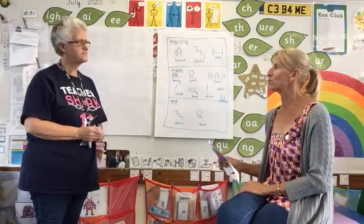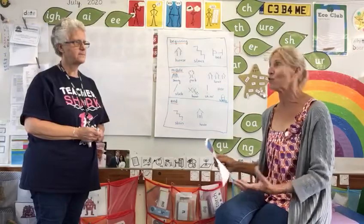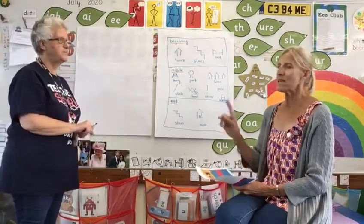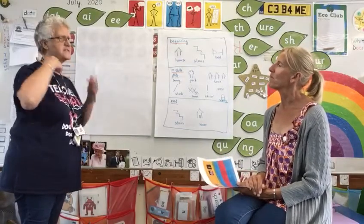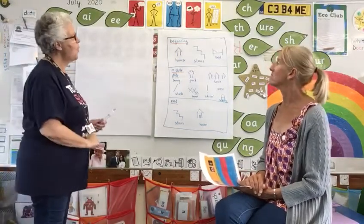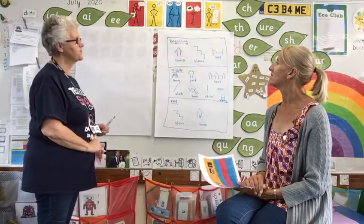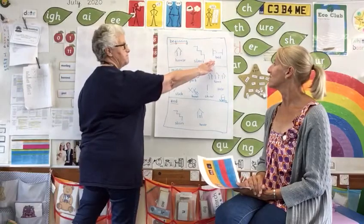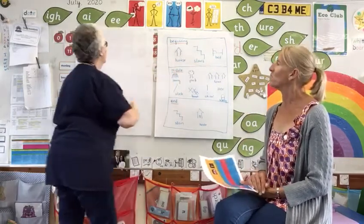Once you've told the whole story using all that story language, you're going to write the story. So we're going to write one sentence to show them. How are you going to begin your story? It's always a good idea to say it out loud first. Once upon a time, there were three skeletons in bed. And I think I'll have a full stop there. Are you going to write it now then?